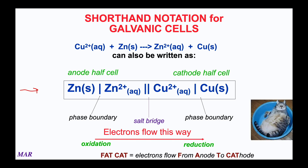A helpful mnemonic is 'fat cat,' which means from anode to cathode. Electrons flow from the anode — the site of oxidation — to the cathode, the site of reduction.